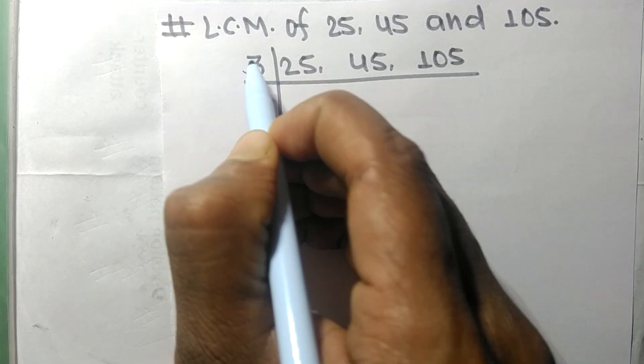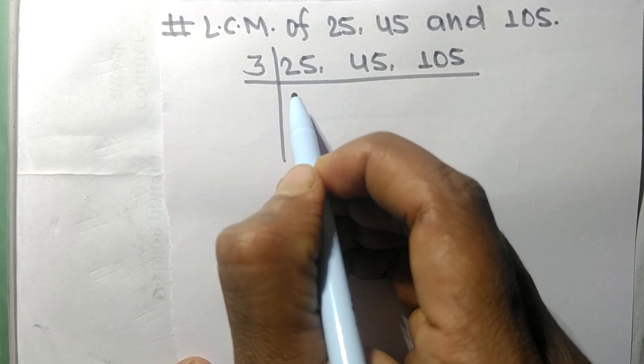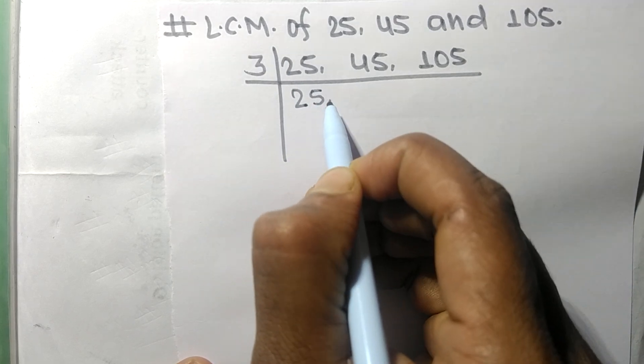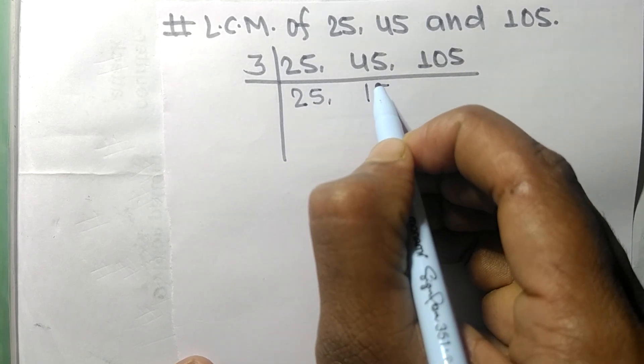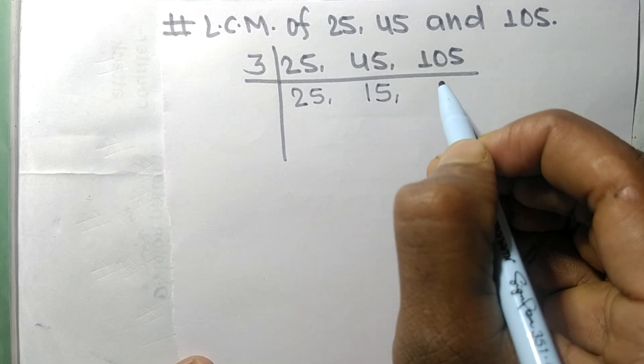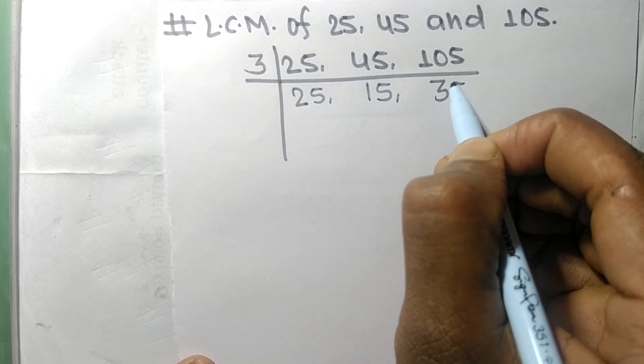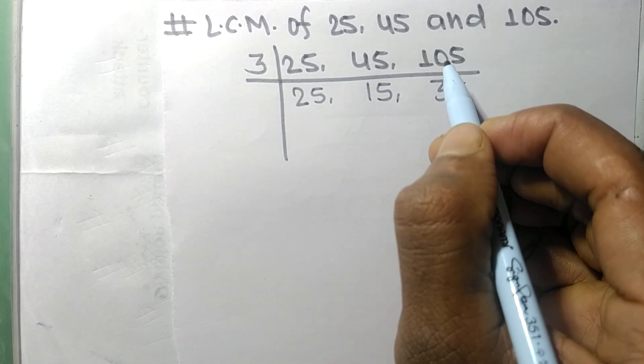45 and 105 are divisible by 3, but 25 is not. 3 times 15 equals 45, and 3 times 35 equals 105.